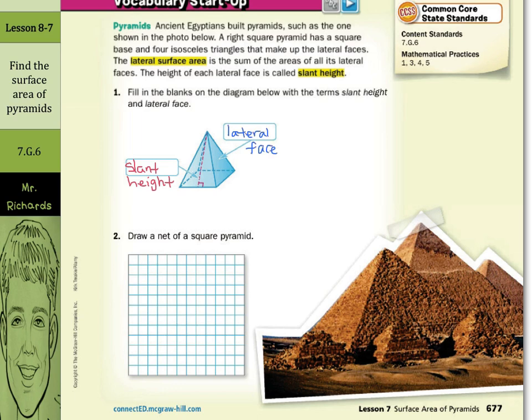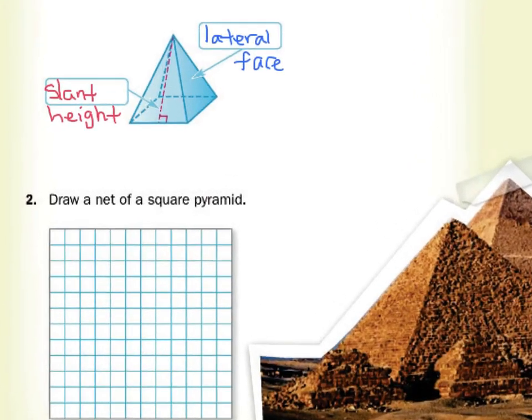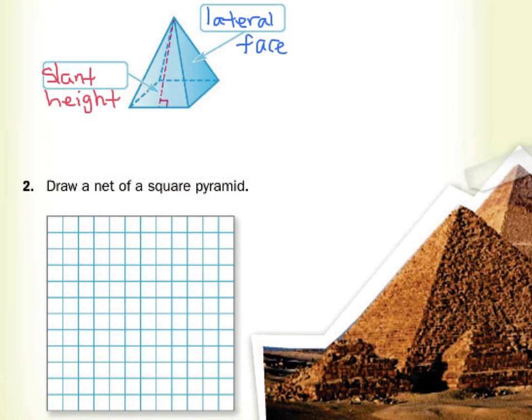Next, we'd like to draw a net of a square pyramid, so let's zoom in a bit here. A net is a two-dimensional drawing, sometimes on graph paper, of a three-dimensional figure. We have the square base, so we'll start by drawing a square — and that's our base.